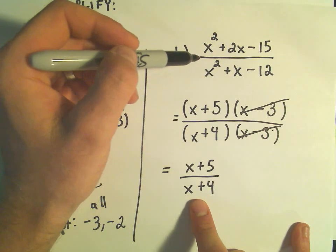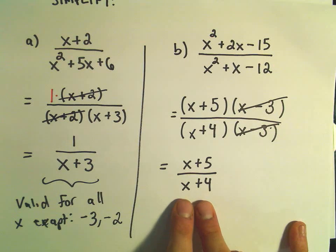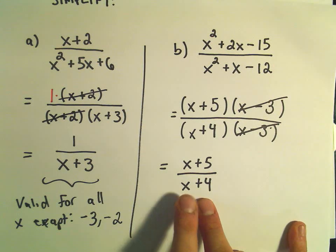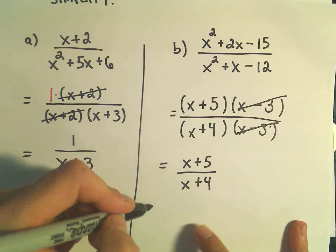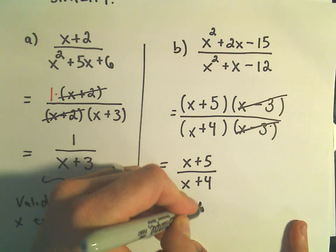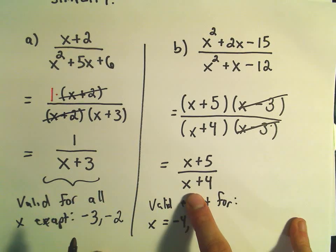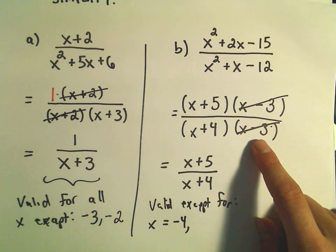But if you try to substitute in values of x to evaluate, clearly we can't use negative 4 because that gives you 0 in the denominator. So it would be valid except for the numbers - x equals negative 4 gives you 0 in the denominator. And we couldn't use positive 3 either.